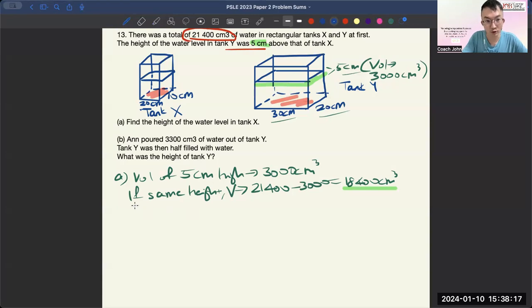So, the technique to do this is to find the combined base area, which is 20 times 10 for Tank X, 30 times 20 for Tank Y, which is 800 cm squared, okay?